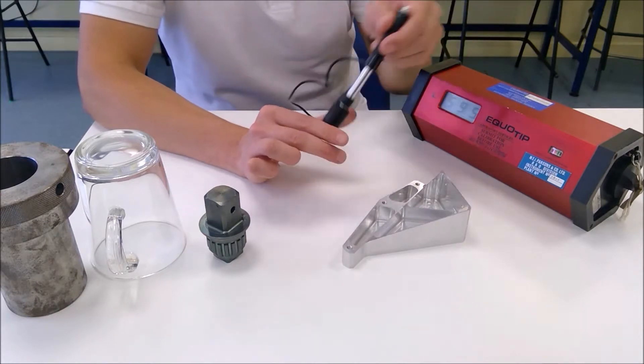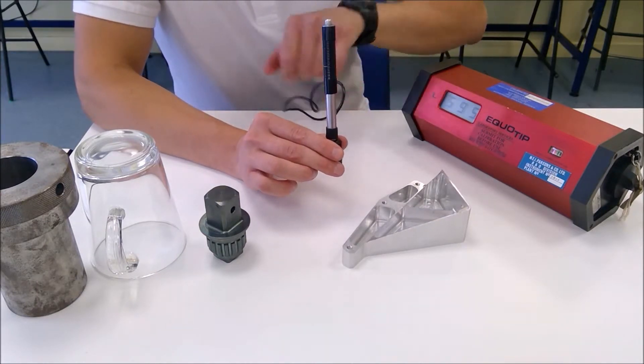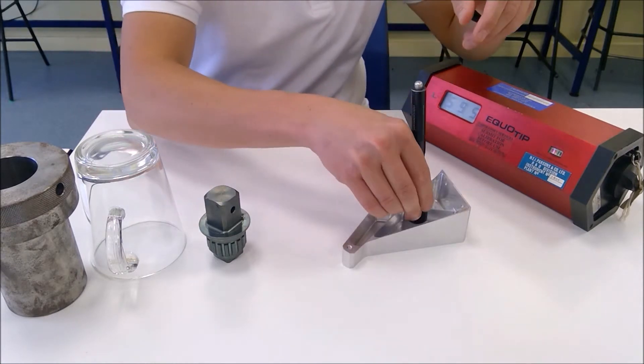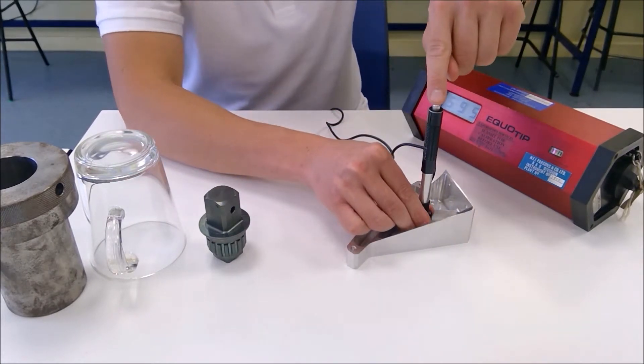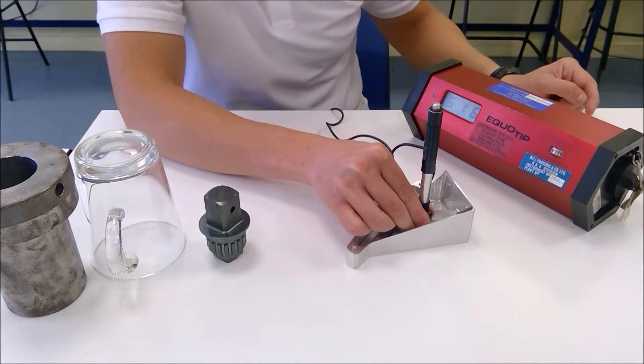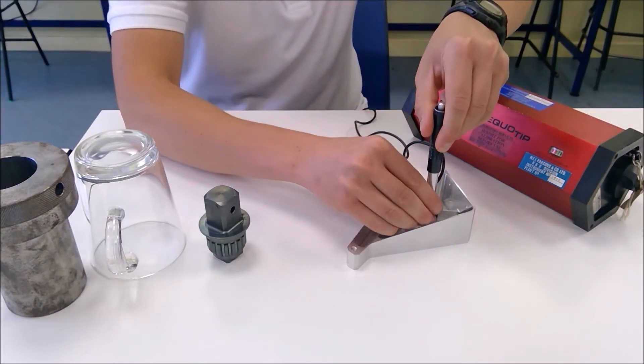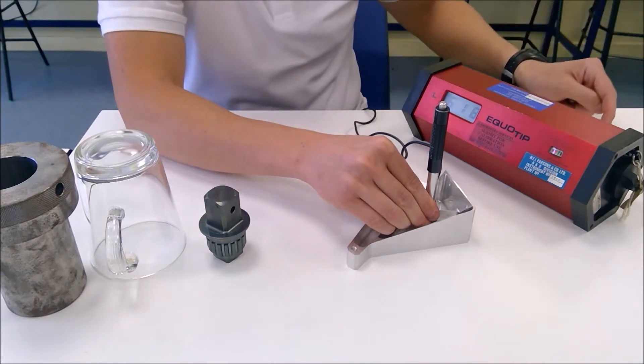So first of all let's begin with our aluminium and we already have our first reading for the aluminium of 595. So we're going to take a second reading, placing the probe against the surface and releasing the ball bearing. We have 616 and finally our third reading, again we have 618.